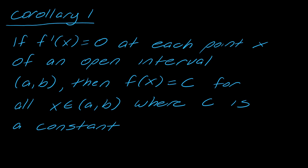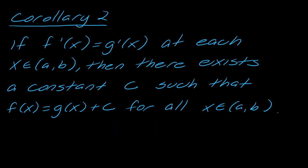And then the second corollary: if f prime of x equals g prime of x at each x in the interior from a to b, then there exists a constant c such that f of x equals g of x plus c for all x in a to b.